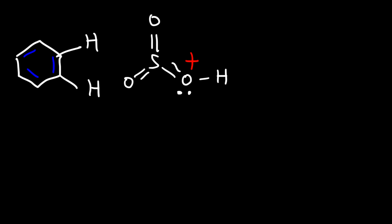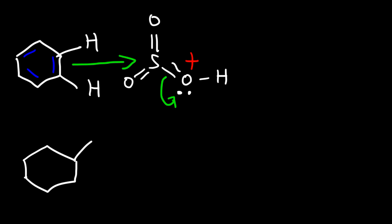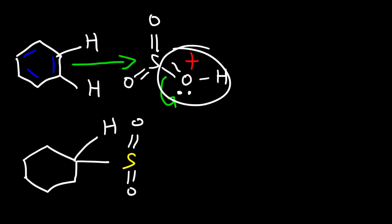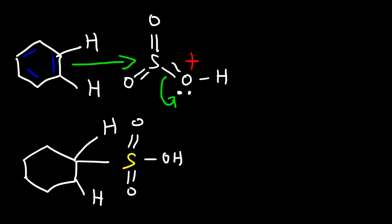In this reaction, the benzene ring is going to attack the sulfur atom, causing this pi bond to break. So here is the sulfur atom — it has two double bonds to oxygen, and now the OH group remains. At this point we no longer have three double bonds but two, and we have a positive charge on the carbon. The next step is to use a base to remove a proton.